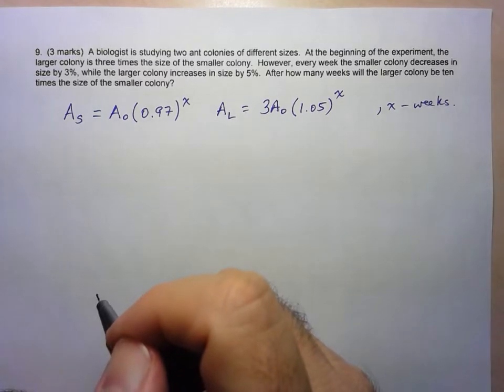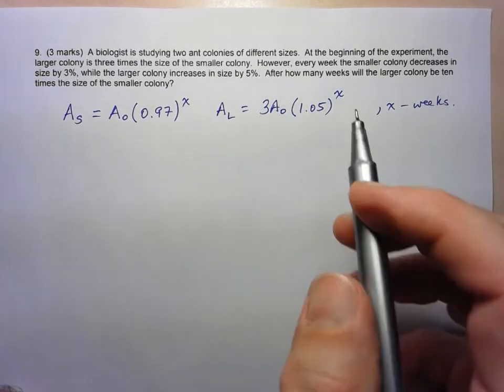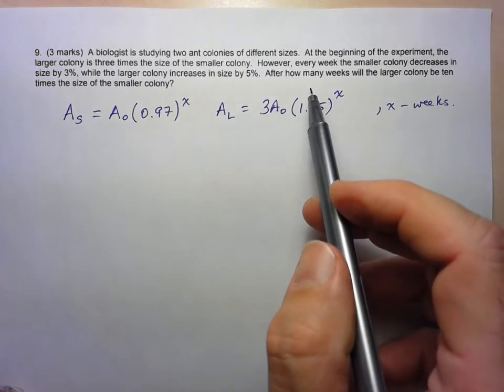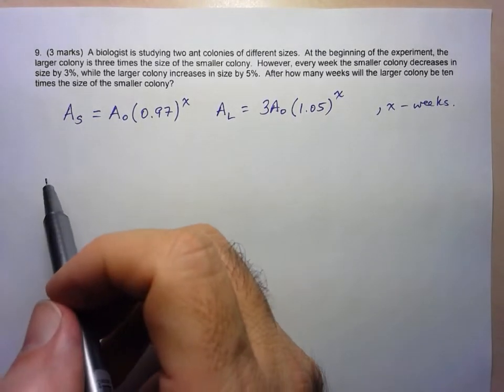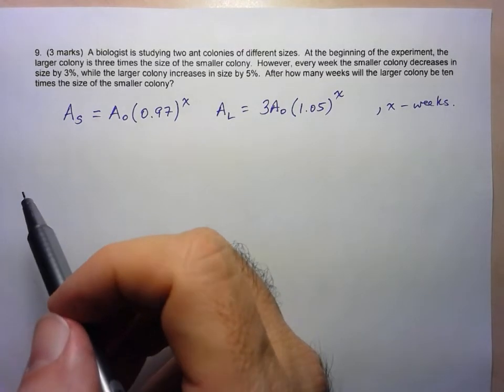Alright, so let's see what they're actually asking us to find. They're asking us to determine how many weeks it's going to take for the larger colony to be 10 times the size of the smaller colony. So we have to try to set up something that we can solve.